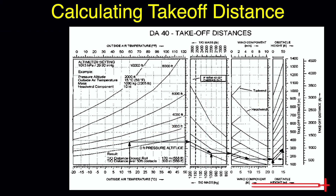One last thing: if we have a tailwind, we would follow the line slanting up rather than down in this column.